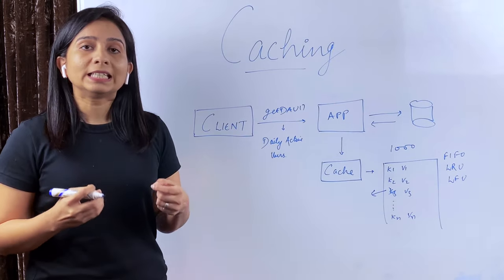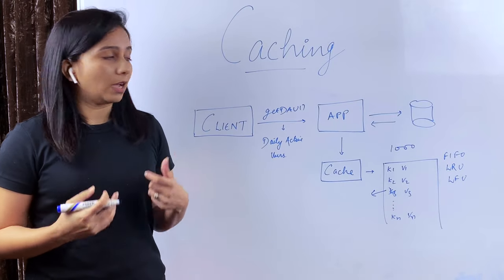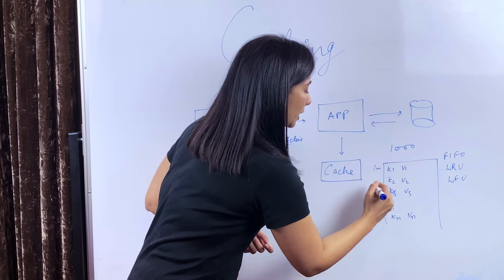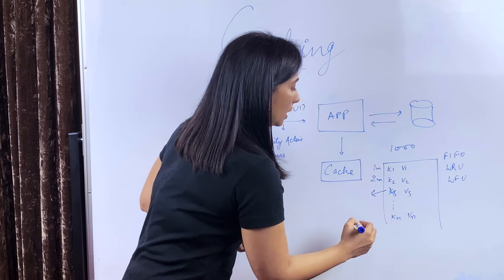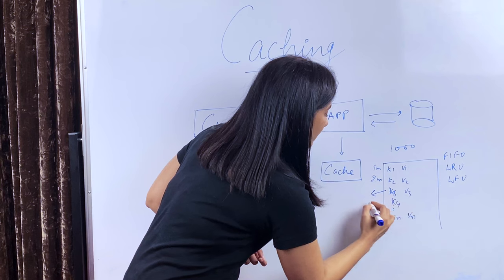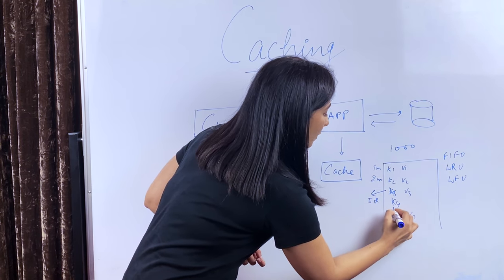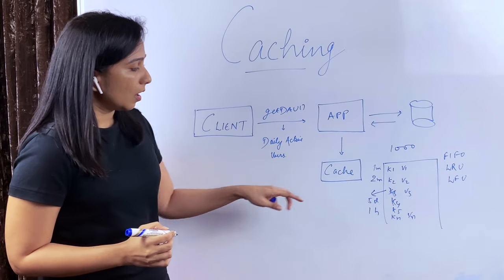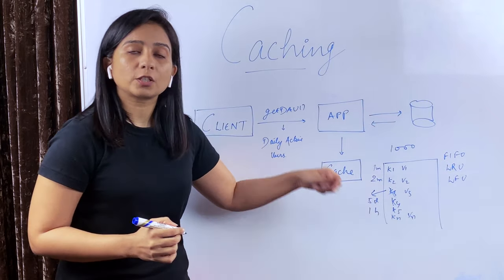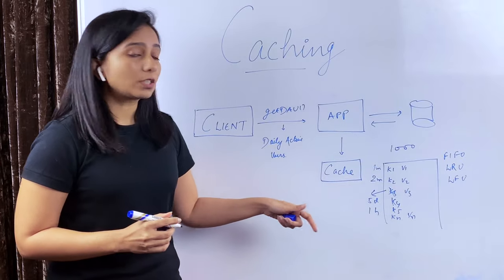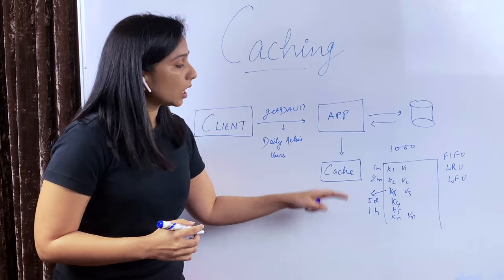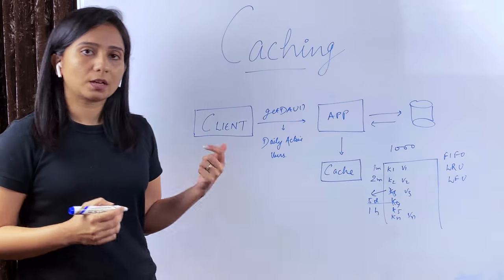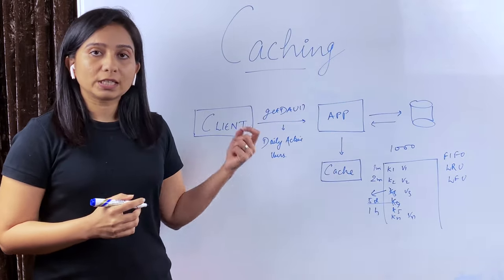Another strategy is Least Recently Used (LRU). Suppose key one was accessed one minute ago, key two was accessed two minutes ago, K4 was accessed five days ago, and K5 was accessed one hour ago. In this case, K4 was accessed a long time ago while all the other keys were accessed recently. So K4 is evicted. That is Least Recently Used.